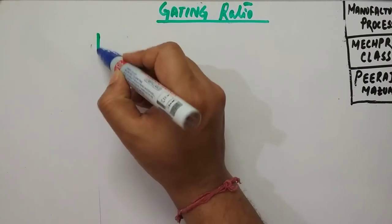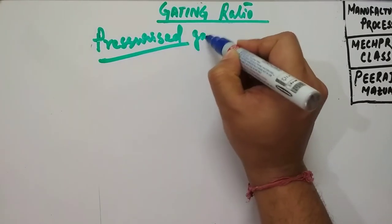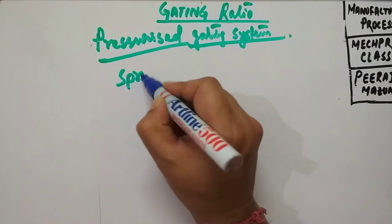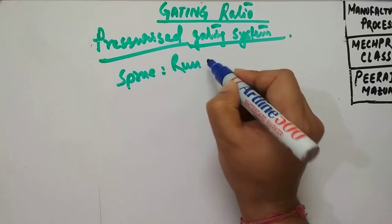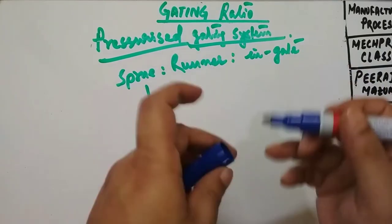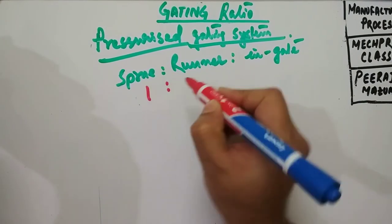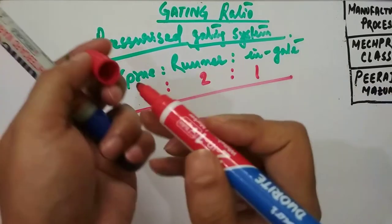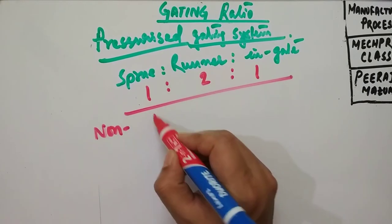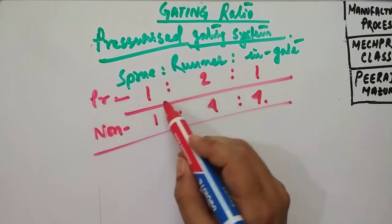So we will be discussing the pressurized gating system. In this case, the gating ratio — that is the sprue is to runner is to ingate — will be one. This is very important and you must keep in mind, it may be asked in different examinations. So previously for non-pressurized system it was 1 is to 4 is to 4.